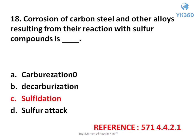Question number 18. Corrosion of carbon steel and other alloys resulting from the reaction with sulfur compounds is — options are: A. Carburization, B. Decarburization, C. Sulfidation, D. Sulfur attack. Answer is option C. Sulfidation.